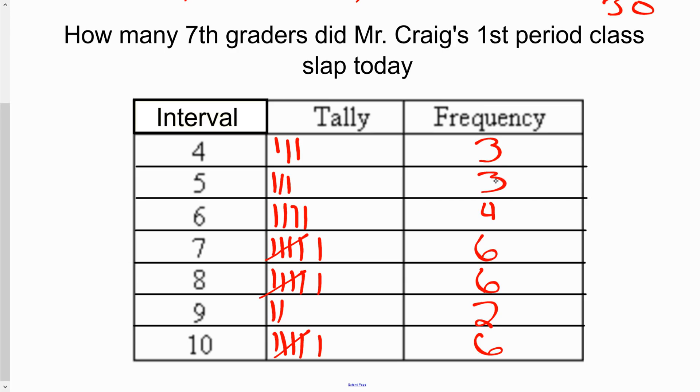So 3 and 3 is 6, plus 4 is 10. Another 6 is 16. Another 6 is 24. Another 2 is 26. And then we have another 6 here. Let me make sure I add these right. 3 and 3 is 6, 4 and 6 is 10, 6 and 2 is 8, and then we have another 6 here. So we get 16, 24, 30.